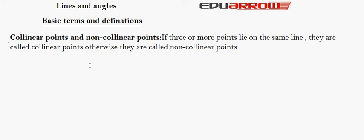Collinear points and non-collinear points: If three or more points lie on the same line, they are called collinear points. Otherwise, they are called non-collinear points.